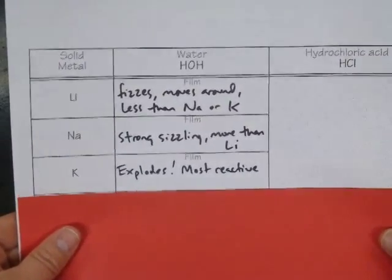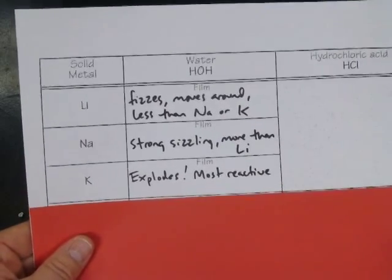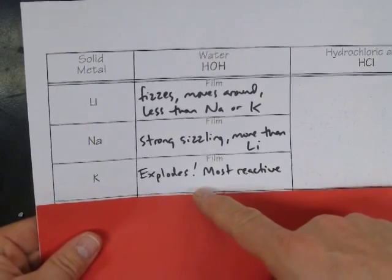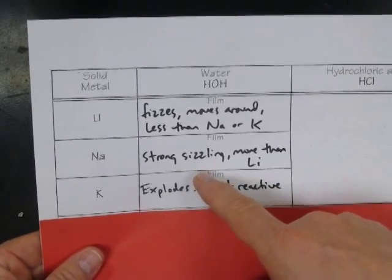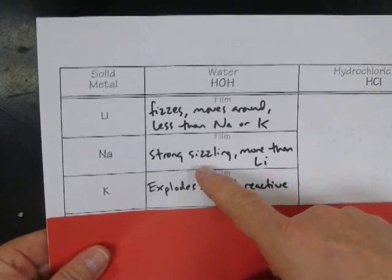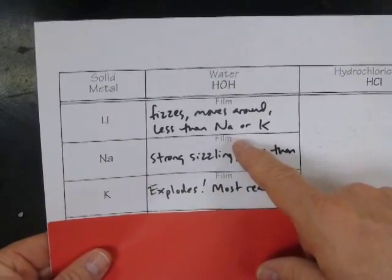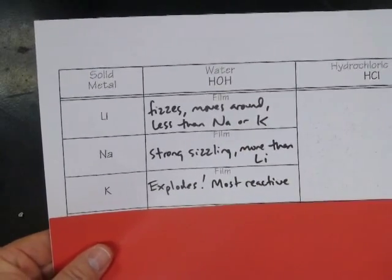In the demonstration video, using elements that were too dangerous for us to have in the lab, we observed that three elements — lithium, sodium, and potassium — combined with water differed in how reactive they were. Potassium was the most reactive; when it was put into the water, it exploded. Sodium was very reactive — it sizzled very strongly but didn't explode. It moved around a lot, much more than lithium, which did fizz and move around, but not quite as much as sodium and definitely not as reactive as potassium.